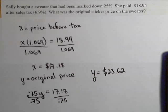So we did that in two steps. Because one, we had to figure out what she paid before tax. And then, we had to see what the original sticker price was.